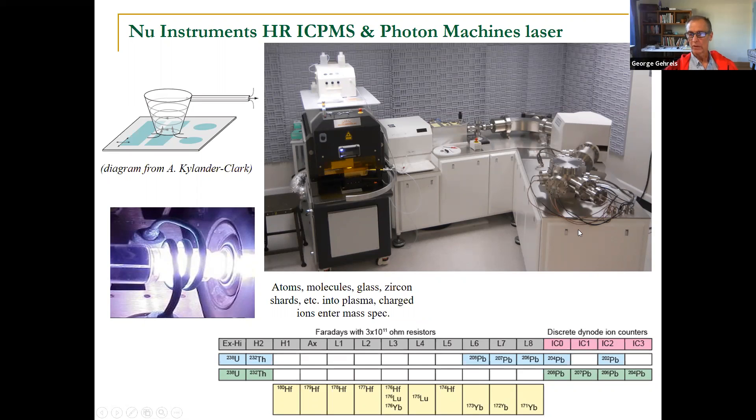This is a multi-collector instrument where we have lots of different detectors for all the different isotopes of interest. So with this instrument, this is probably the best instrument to use for uranium lead geochronology. You can measure 238, 232, 8, 7, 6, 4, and 2 all at the same time. And you can also do other isotope systems. This is how we use hafnium isotopes, which can only be done on a multi-collector mass spectrometer.